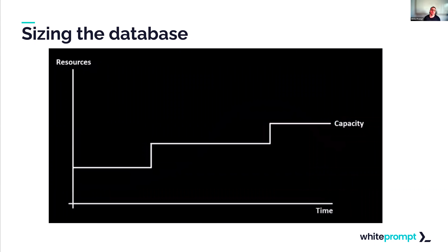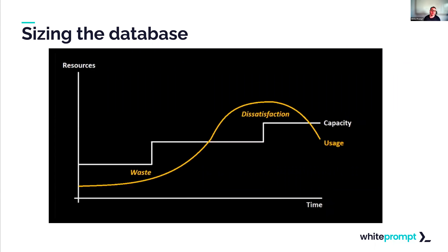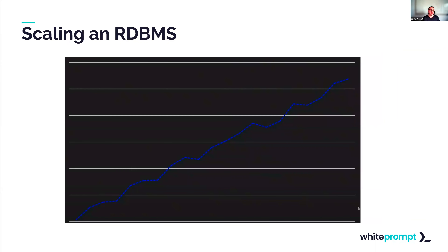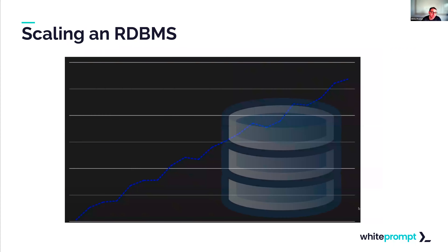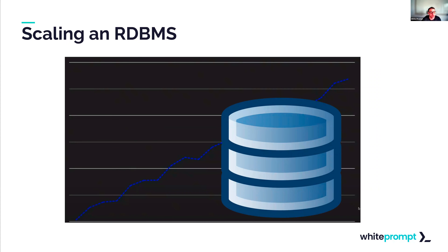When you size a relational database, you get incremental chunks of capacity, which means sometimes you'll be wasting money or sometimes having a bad user experience. For example, first you go with a small box, then a bigger box, then an even bigger box — and at some point you will run out of bigger boxes.